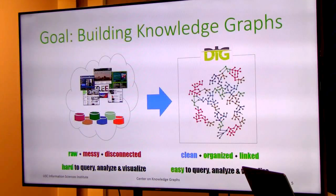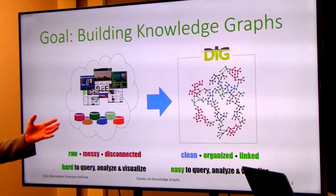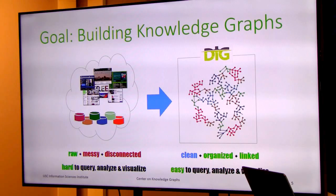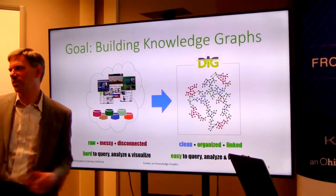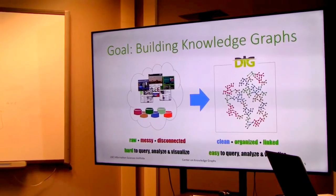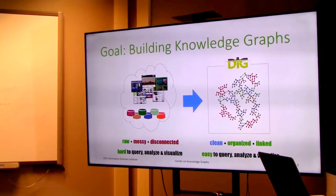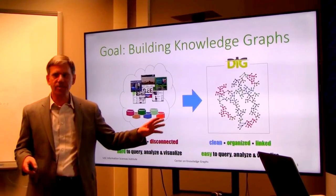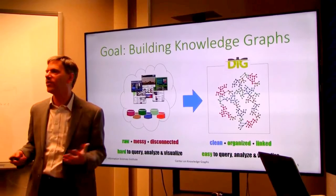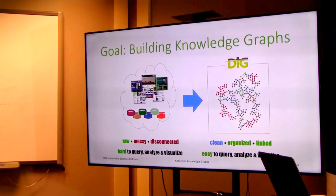Our goal is to basically take all this data that's out there — it might be on the web, in databases, spreadsheets, or online resources — data that can be hard to query, analyze, and visualize, and then turn it into something well organized. We have a system called DIG, which is our overarching project to build these knowledge graphs, and then we apply it in lots of different application domains.